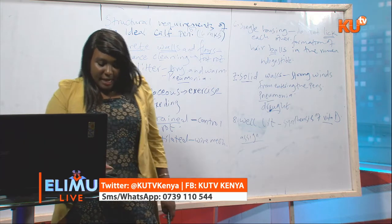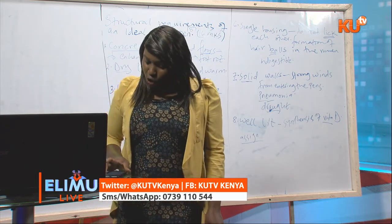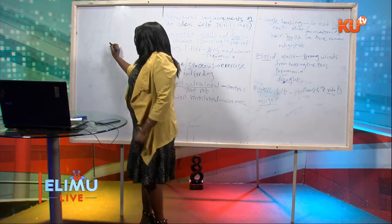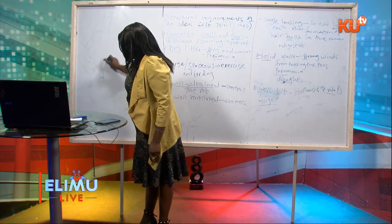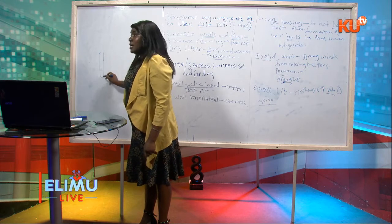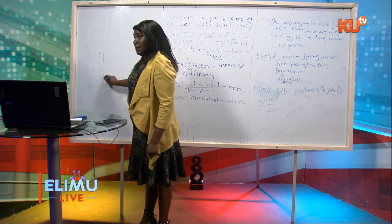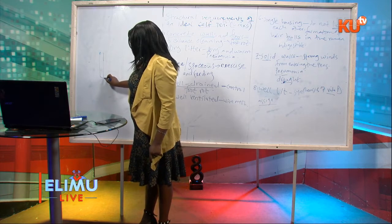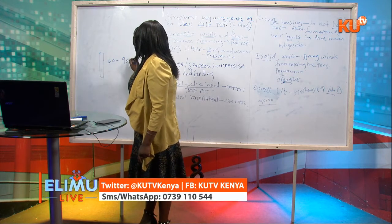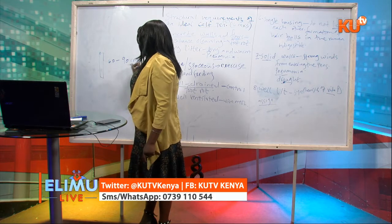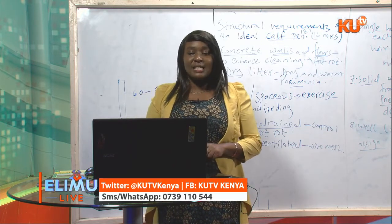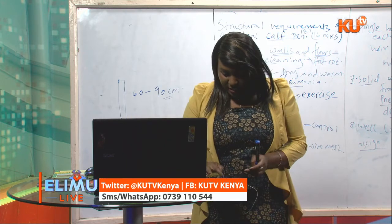A question from Millie: what height should a calf pen be raised? If you are planning a raised permanent calf pen — especially one with slitted floors — you should raise it to a height of between 60 and 90 centimetres from the ground. The four posts should measure a height of 60 to 90 centimetres. That is the ideal height for a raised calf pen. Thank you, that is a very good question.